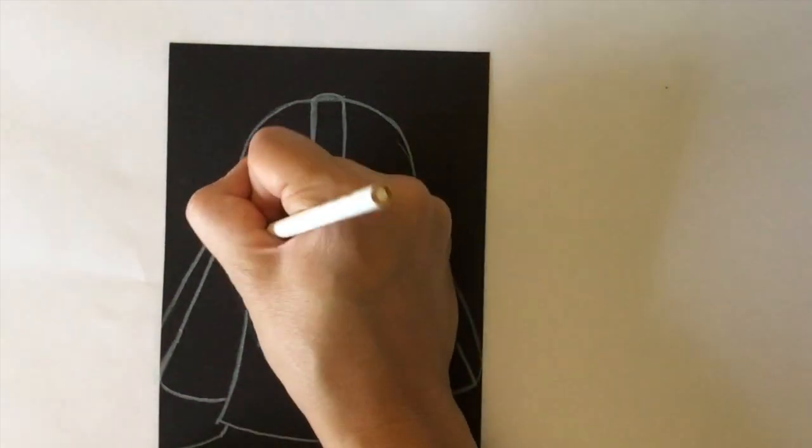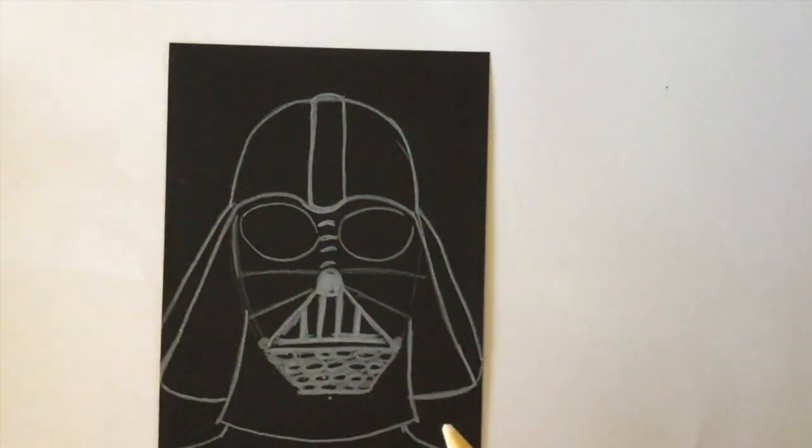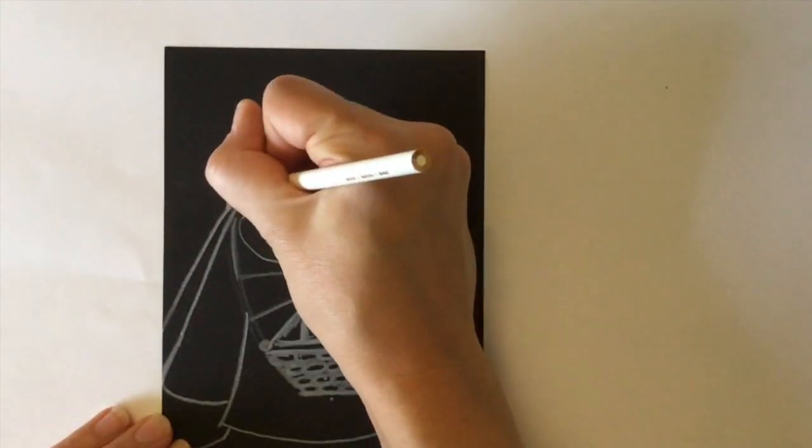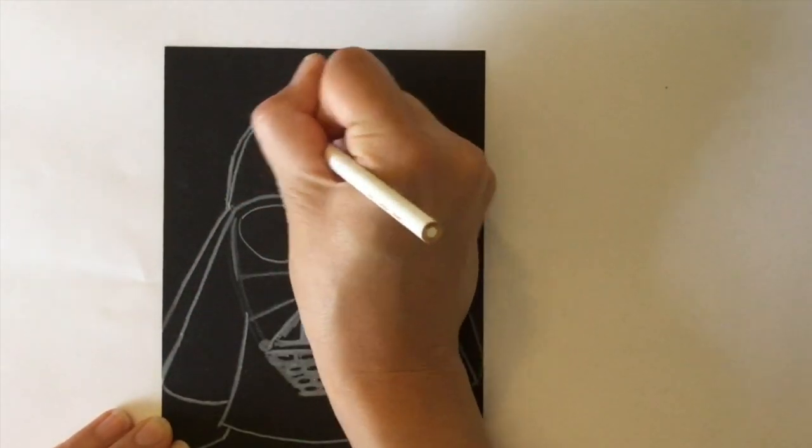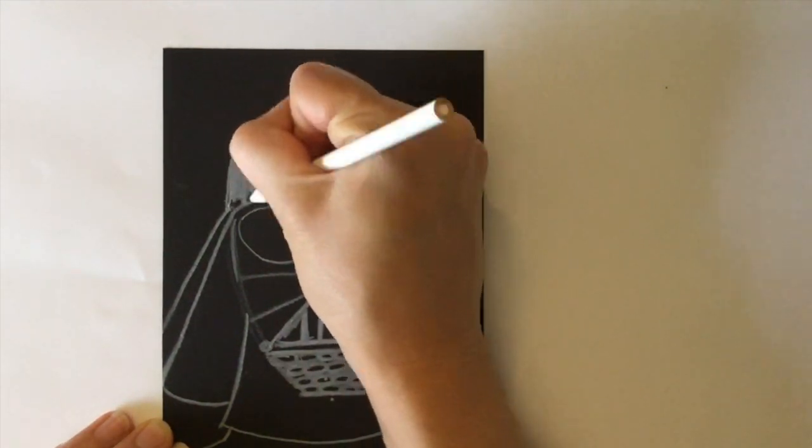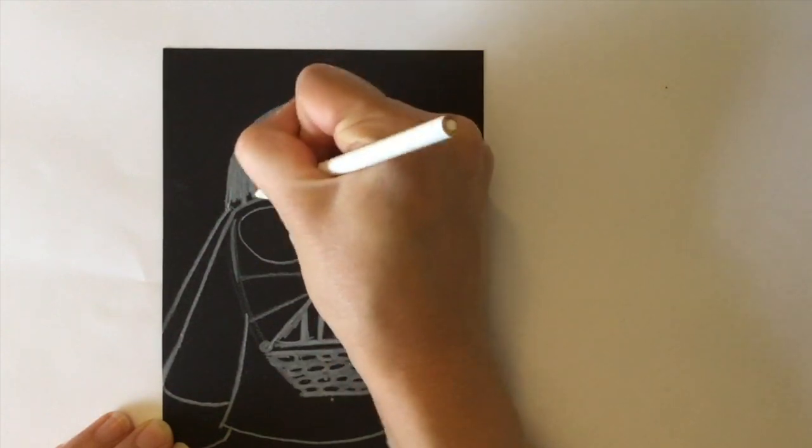Darth Vader's helmet is black and very reflective. Drawing white on black helps to create the illusion of reflectiveness. Throughout this drawing, I thicken my lines and add larger fields of whiteness to indicate light reflecting off of his bad self. Follow along for some of the marks I make to imitate reflectiveness.